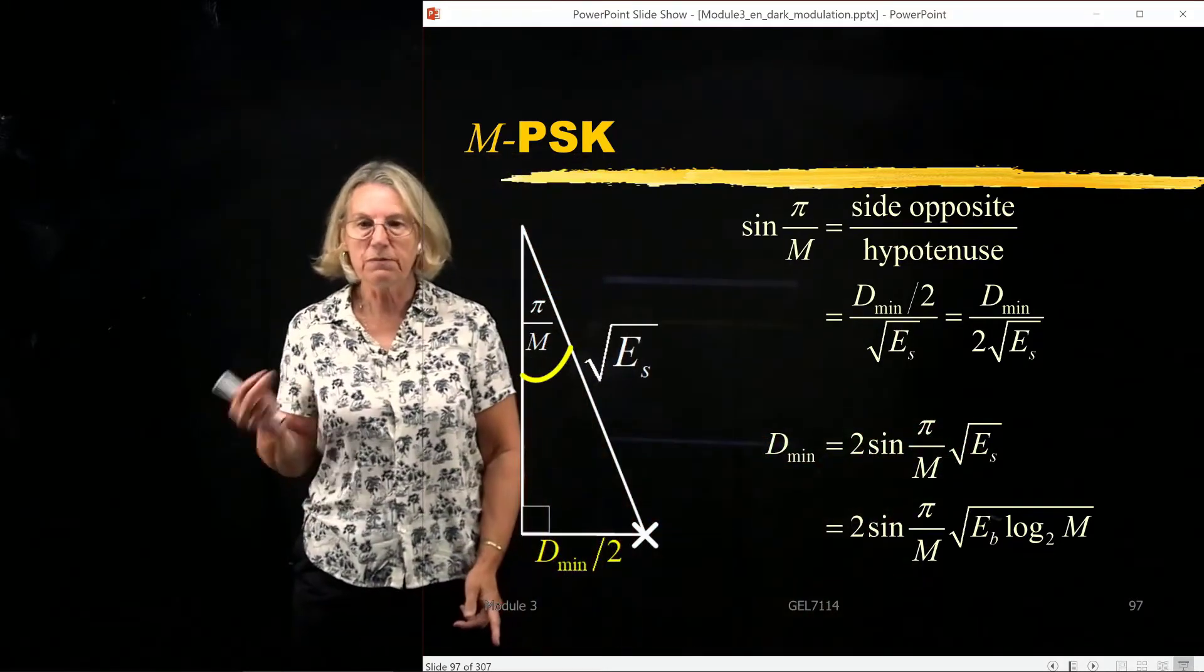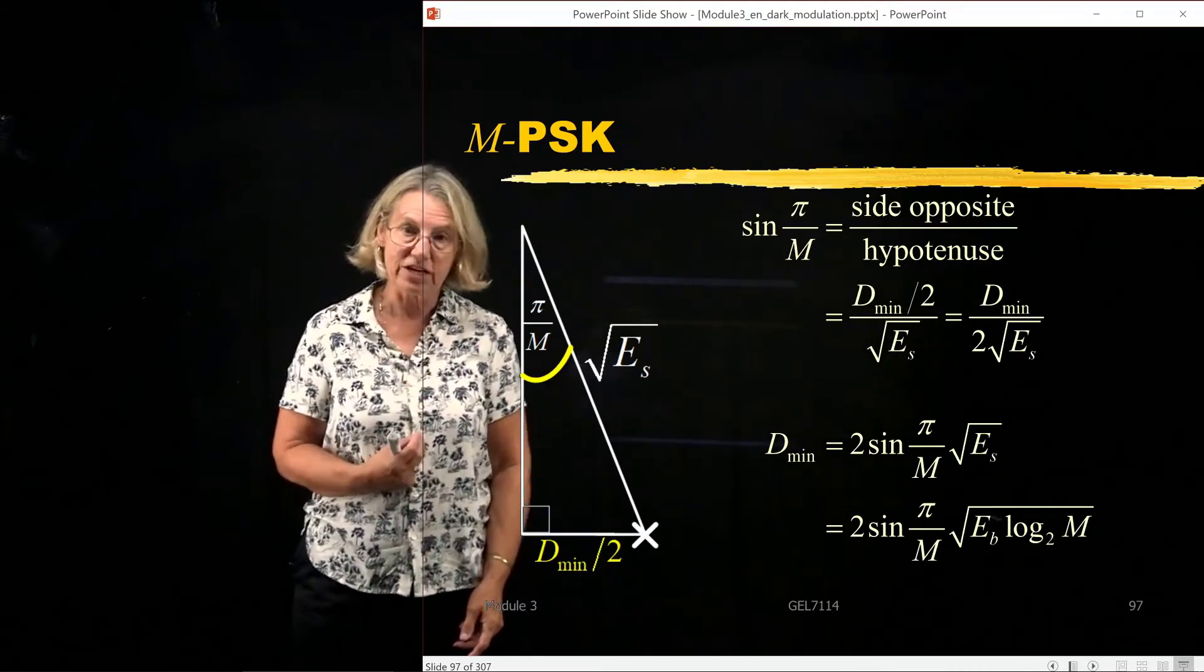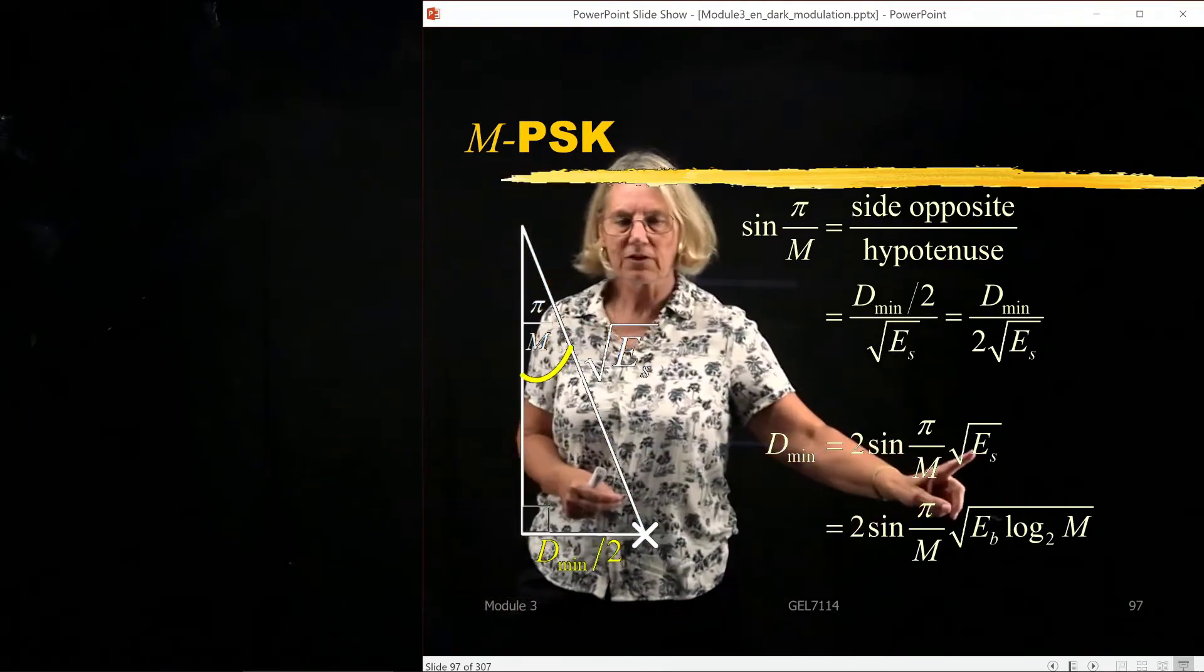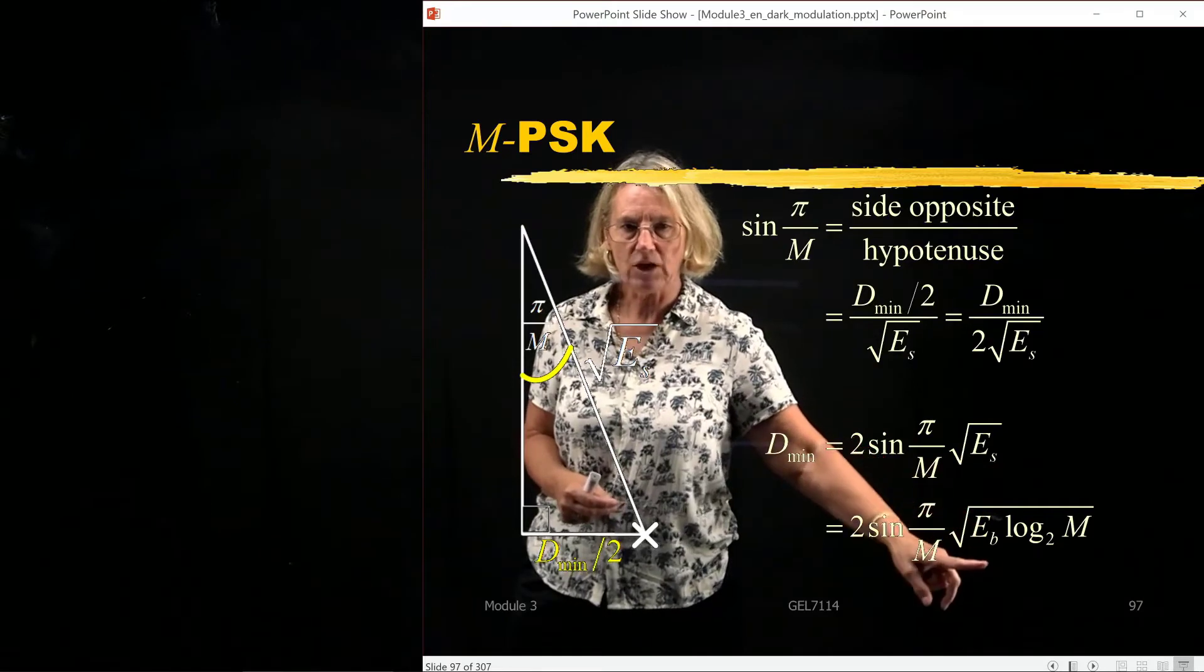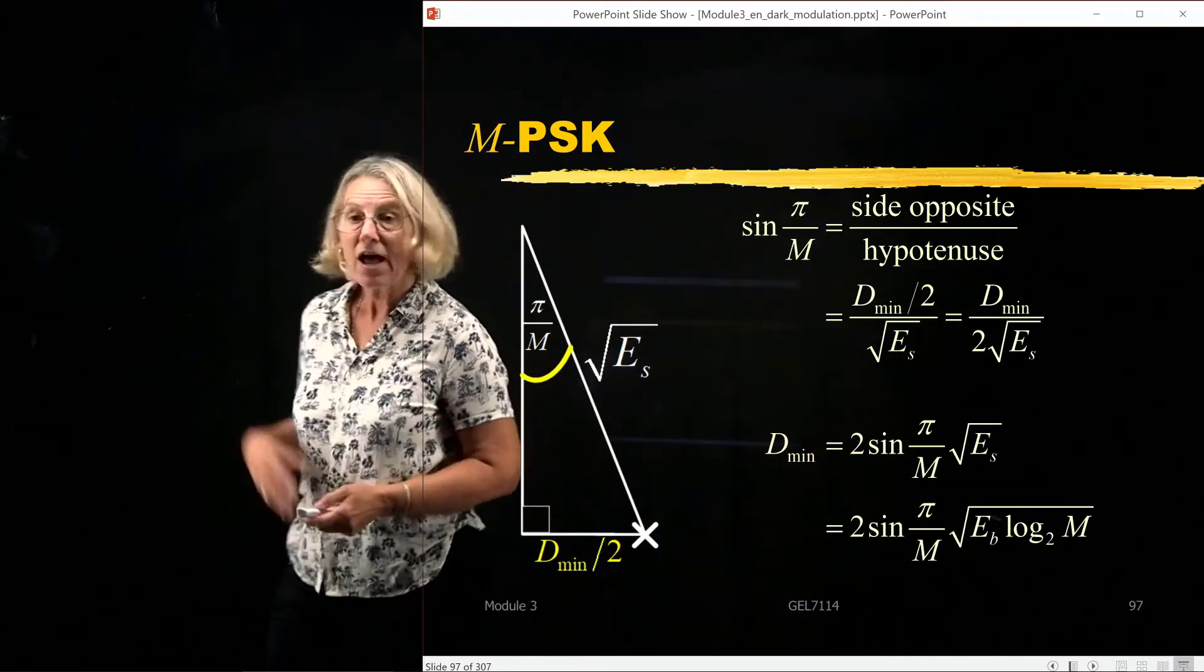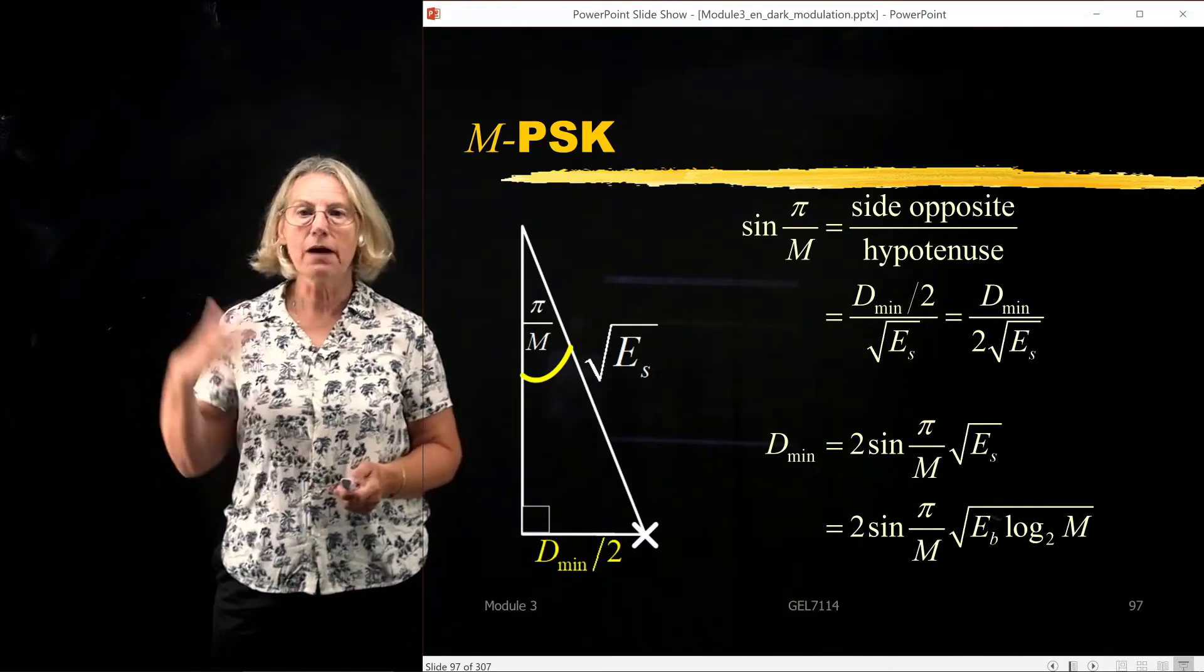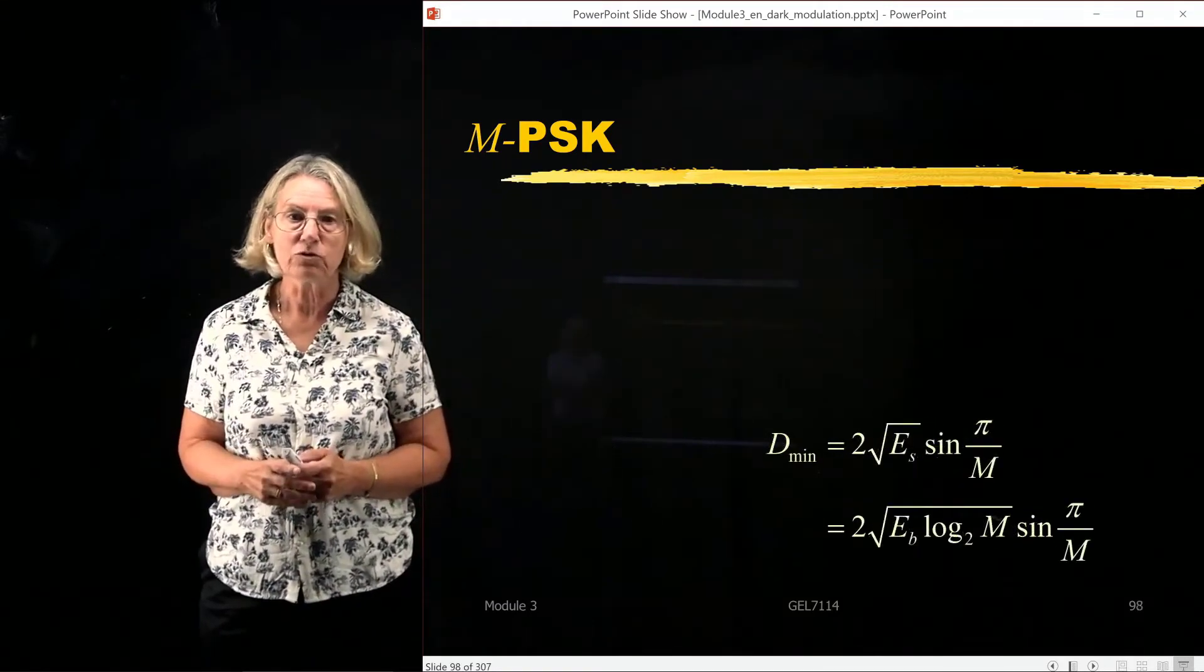Or if I wanted to write this in terms of EB instead of ES, in terms of the average energy per bit instead of the average energy per symbol, I would replace the average energy per symbol by EB times log_2 M. So now I have an expression for D_min that I can use in my approximation coming from the union bound.